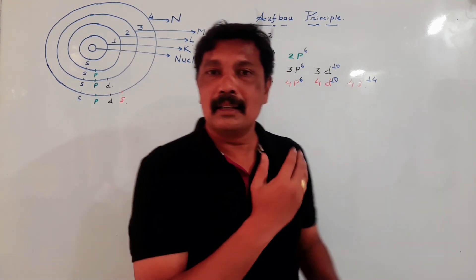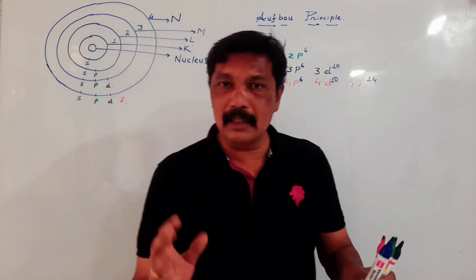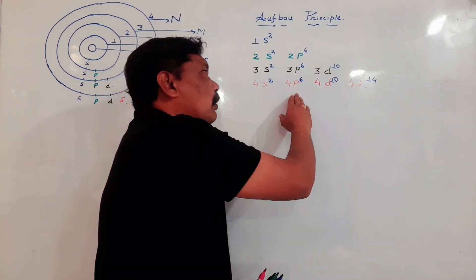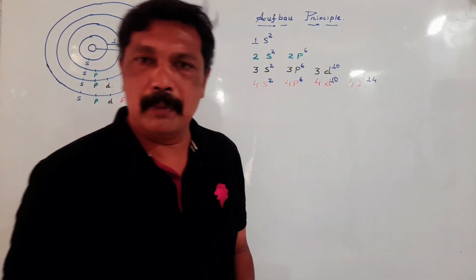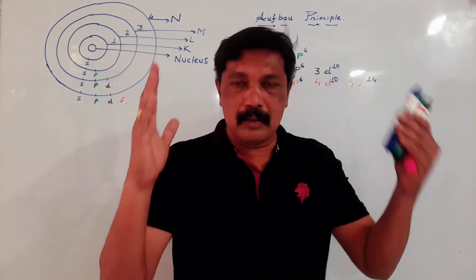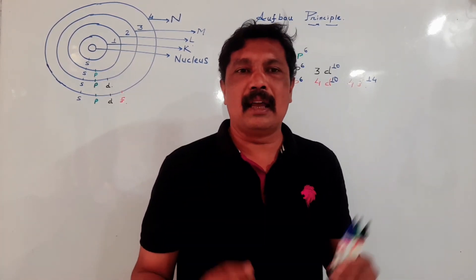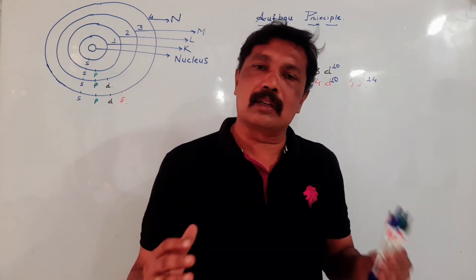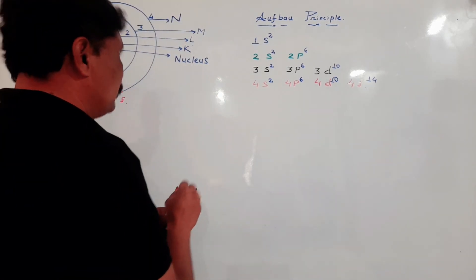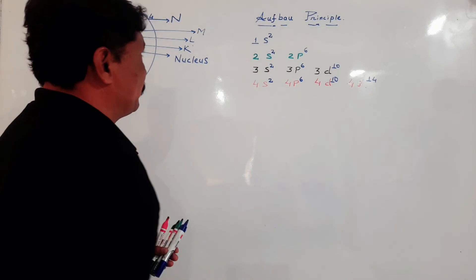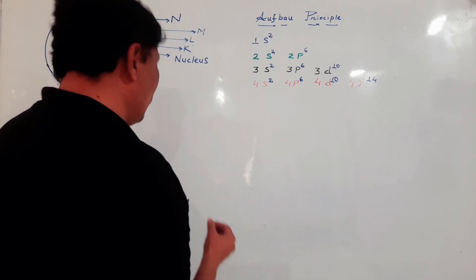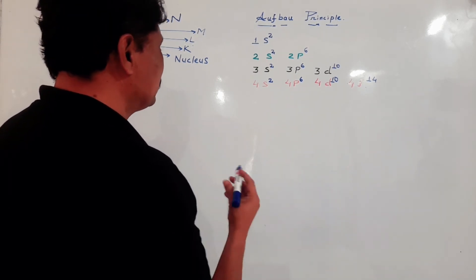Up to 10th standard, this is not taught to you. In 10th standard, you will learn classification of elements, where you have to identify S block, P block, D block, and F block elements. Therefore, we are going to study it now so that our basic knowledge is strong and we can easily understand the next topic. According to the Aufbau principle, there is a definite pattern in which we arrange the electrons.